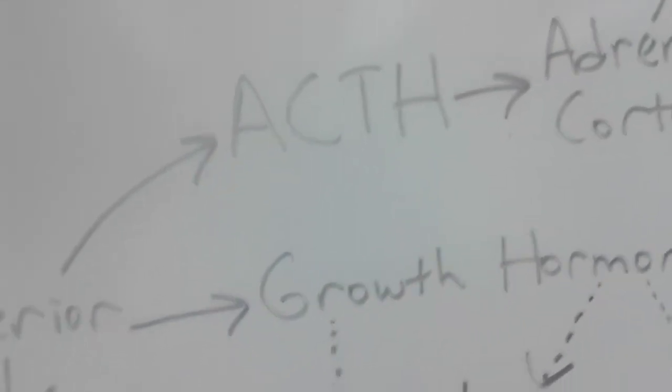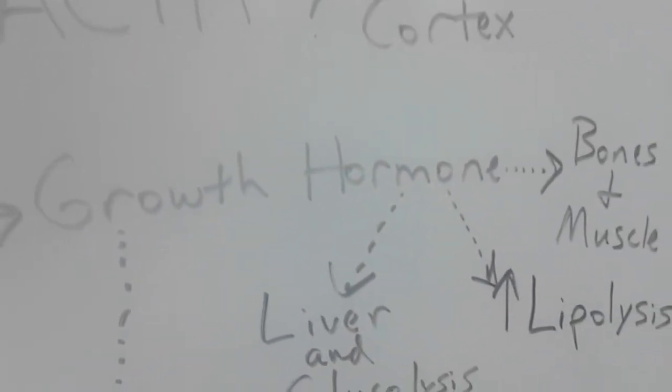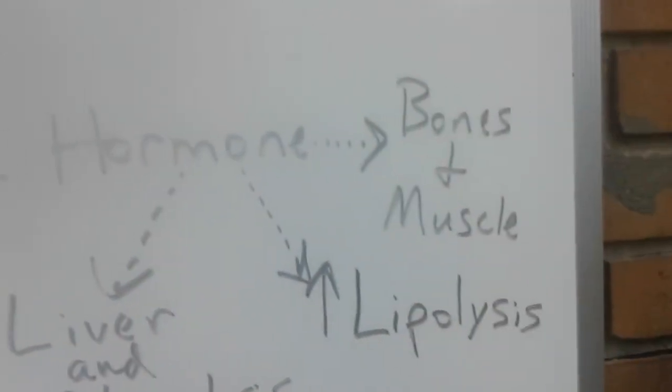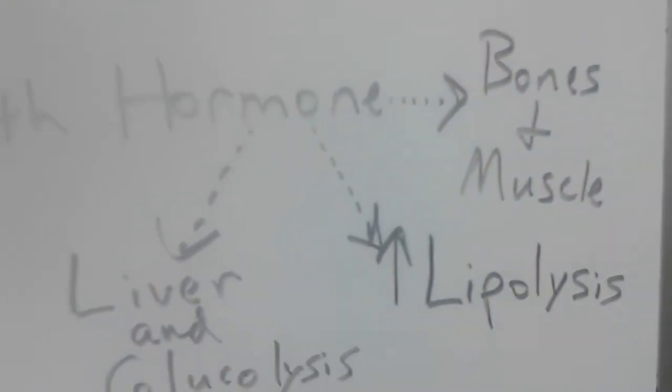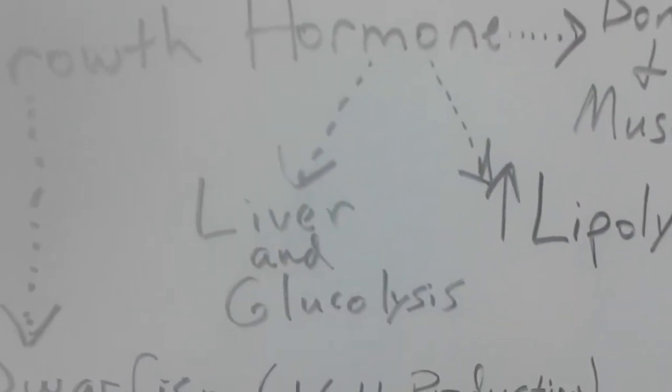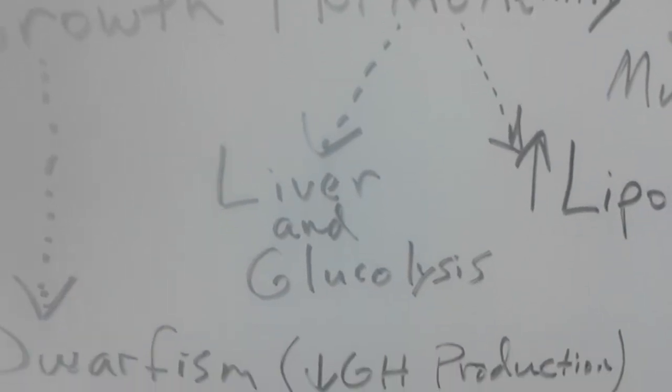Now the anterior lobe is busy, it's producing all types of stuff. So not only does it produce ACTH but it also produces growth hormone. Growth hormone has a lot of things that it targets. It targets most of the cells of your body, specifically it targets bone cells and muscle cells. It can lead to the increase of lipolysis.